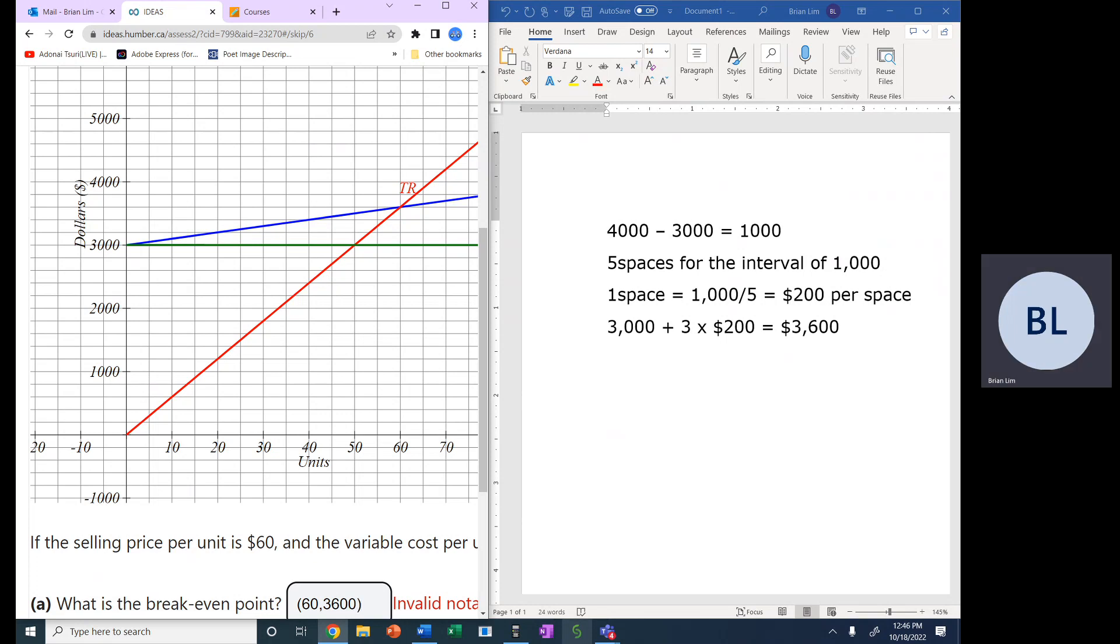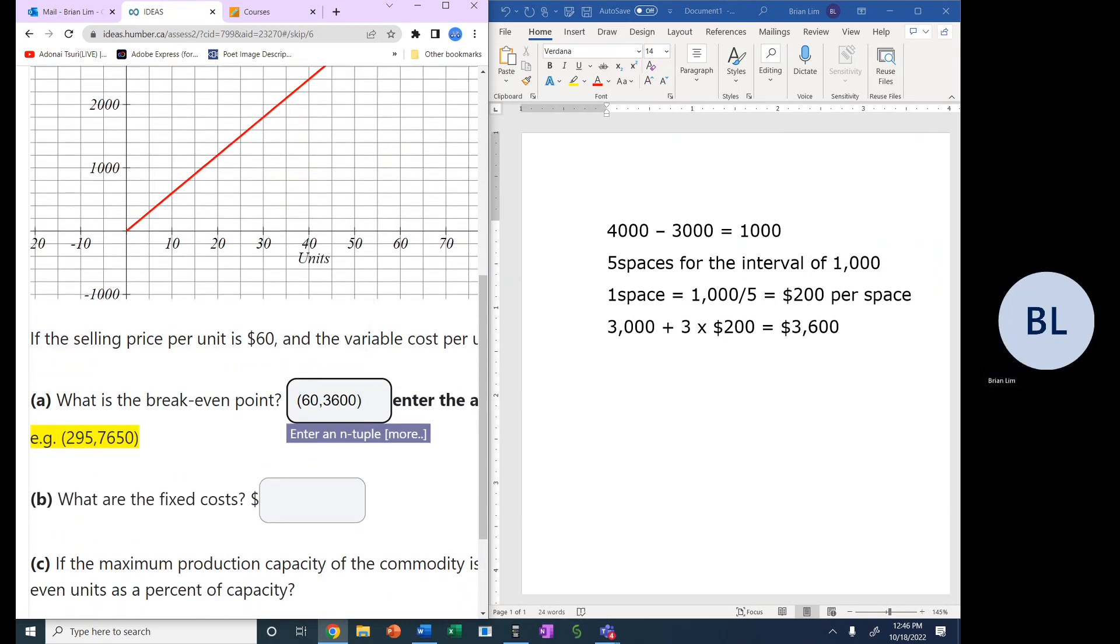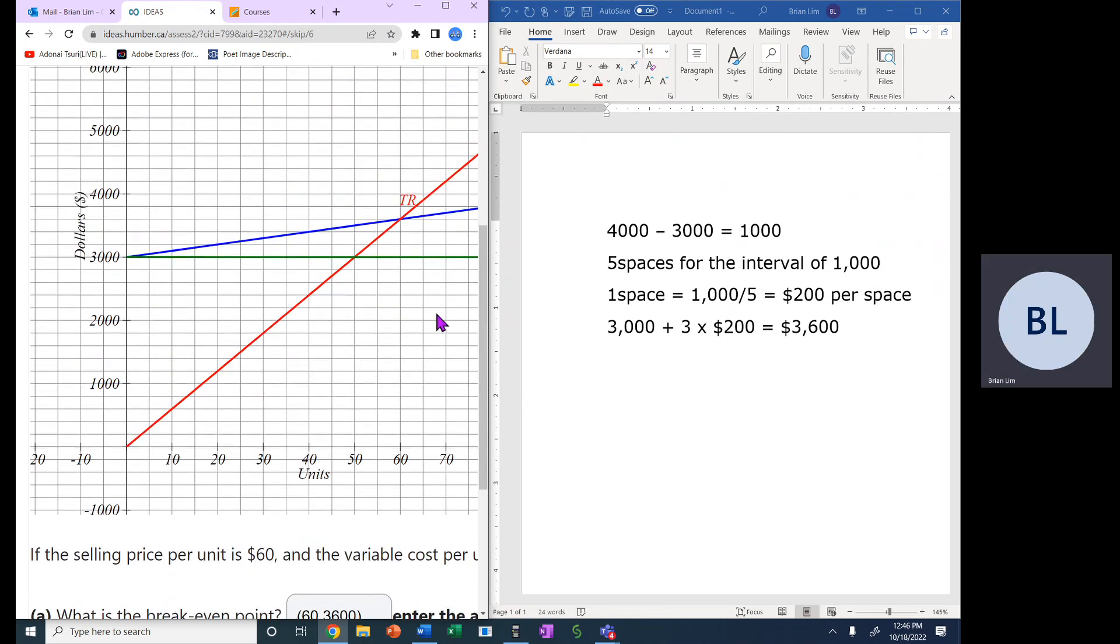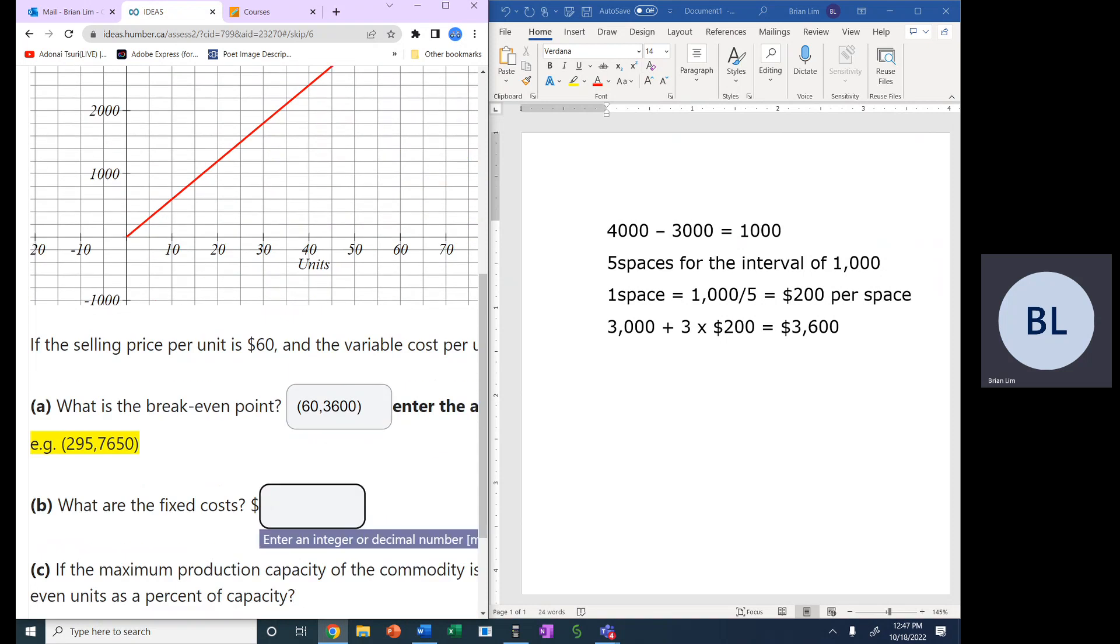So there we are. Now, what are the fixed costs? Well, fixed costs, we're looking at this line, this horizontal line is fixed. So it never changes. And that is exactly as it's 3,000 right here. So that number should be 3,000.